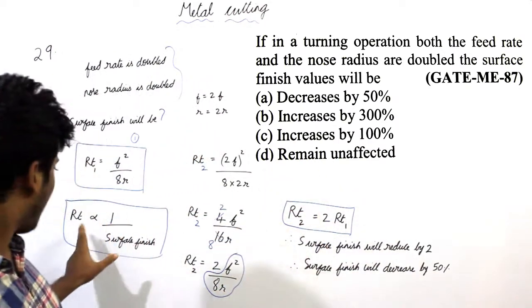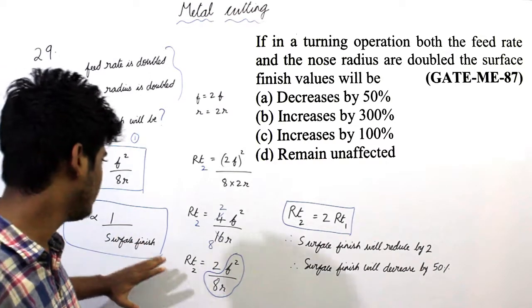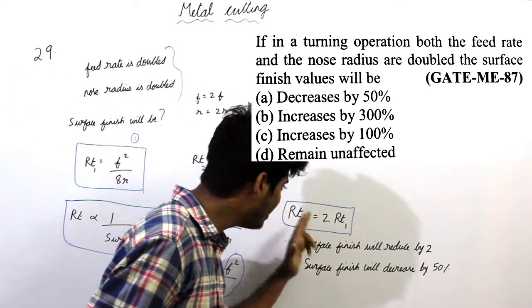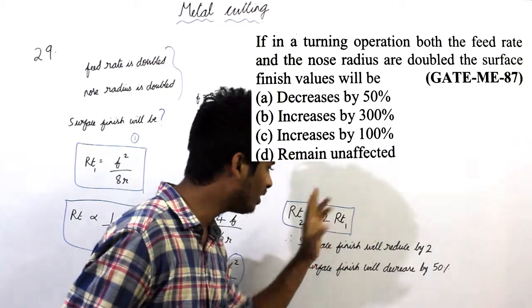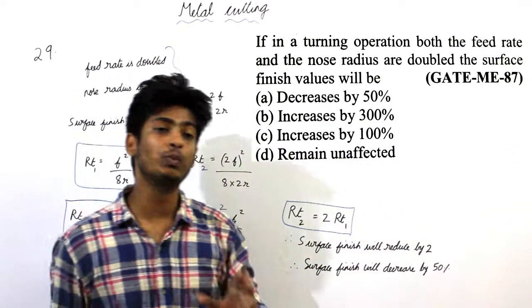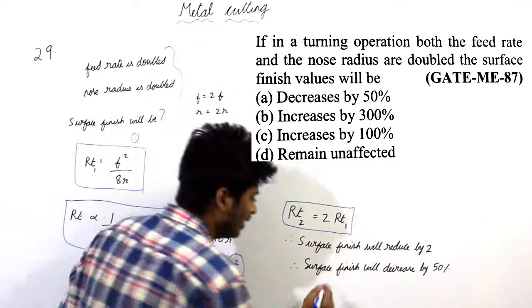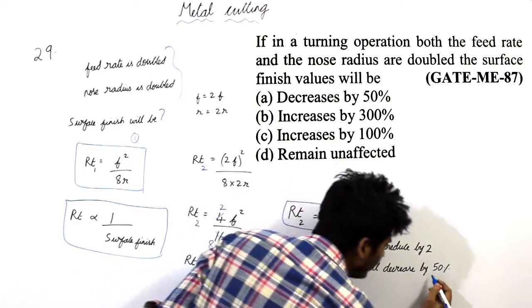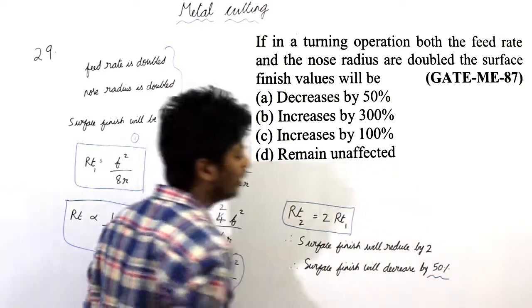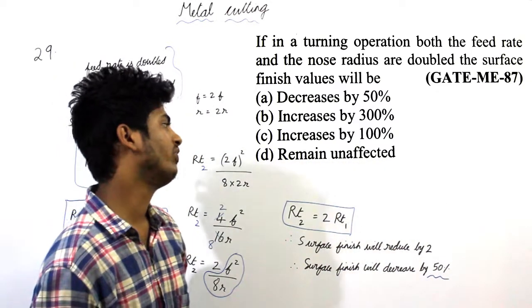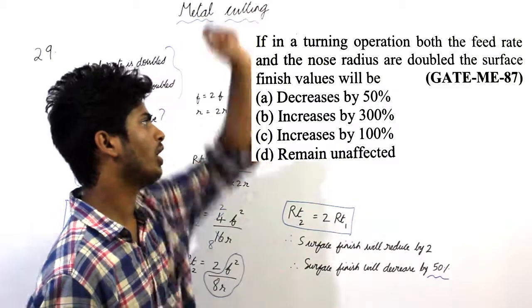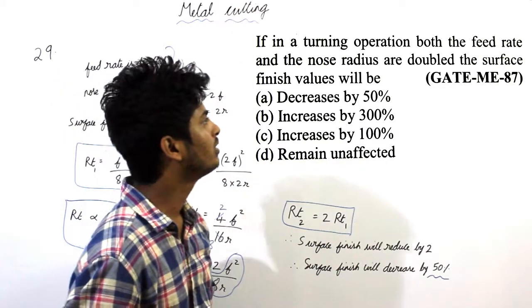I have already said Rt is inversely proportional to surface finish. If Rt value is increased by 2 times, then surface finish will reduce by 2 times. So the surface finish will decrease by 50%. From the given choice, the correct option is A.